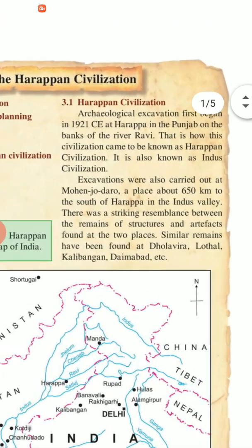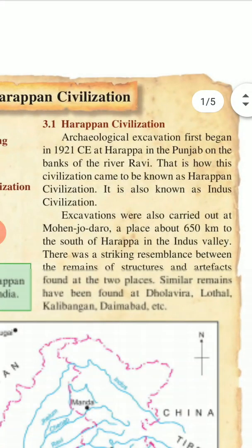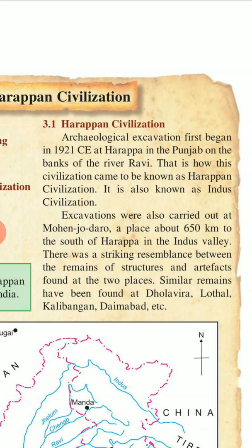Archaeological excavation was begun in 1921 CE at Harappa in Punjab, on the banks of the River Ravi. This is how this civilization came to be known as the Harappan civilization. It is also known as the Indus civilization. Excavation was also carried out at Mohenjo-daro, a place about 650 kilometers to the south of Harappa in the Indus Valley. There was a striking resemblance between the remains of structures and artifacts found at the two places.